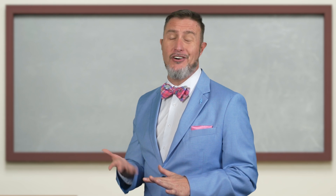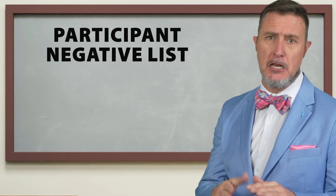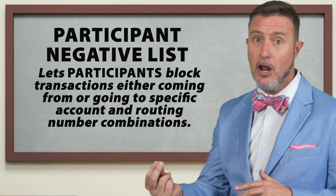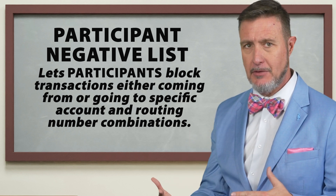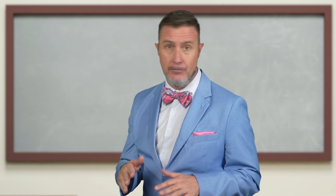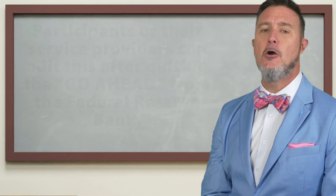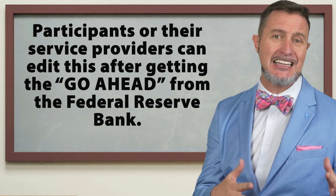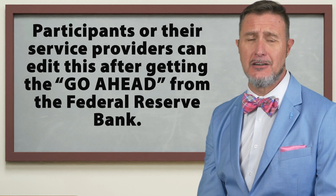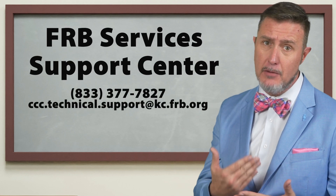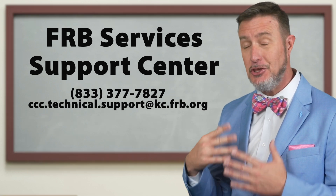There are a couple other settings we all need to be aware of, and that is the participant negative list. This setting lets participants block transactions either coming from or going to specific account and routing number combinations — it's like a blacklist for accounts that they don't trust. Any participant that sends or receives customer credit transfers can use it. Participants or their service providers can edit this after getting the go-ahead from the Federal Reserve Banks. You have to call the FRB Services Support Center to get it turned on and activated, and then you configure it.